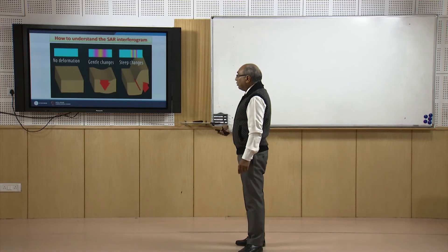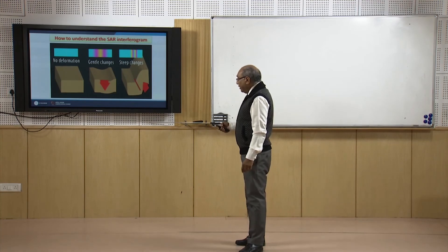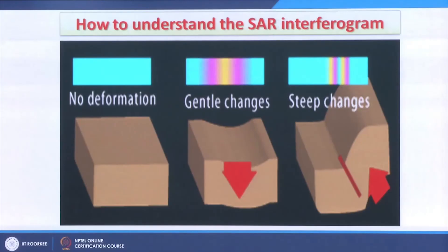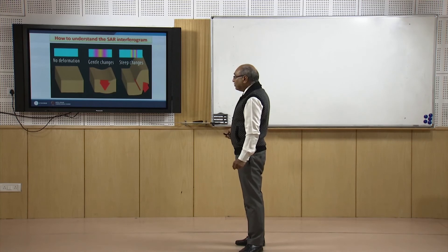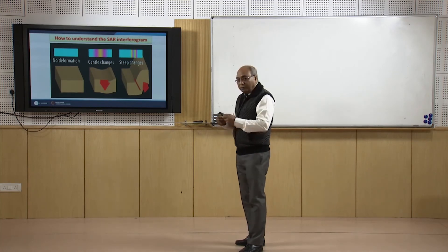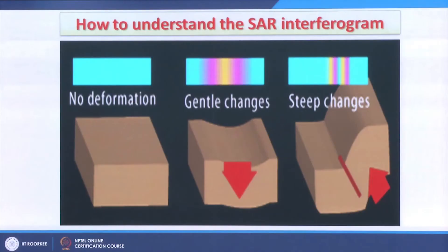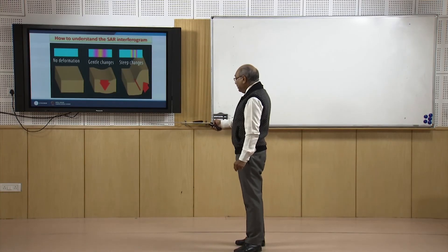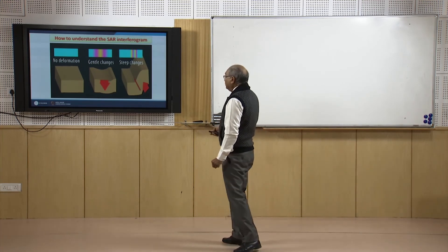Where no changes have occurred, no fringes are observed. If the ground has deformed, fringes appear, and where steep changes have occurred the fringes are very closely spaced. Three examples demonstrate: no changes/no deformation, some deformation, and very sharp deformation, also illustrated through models.